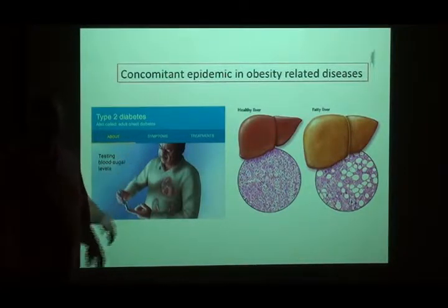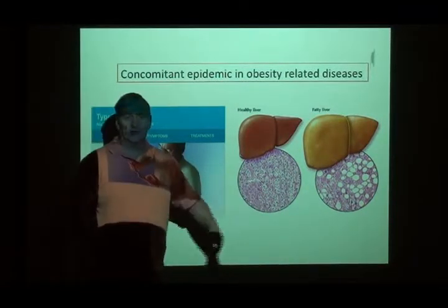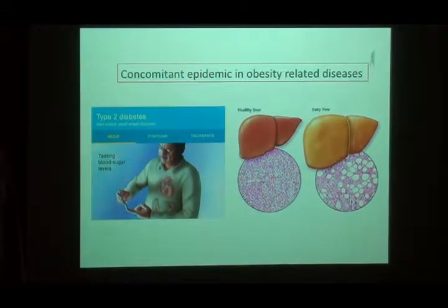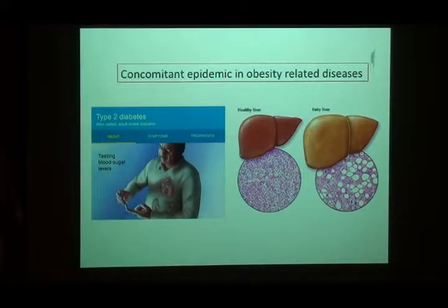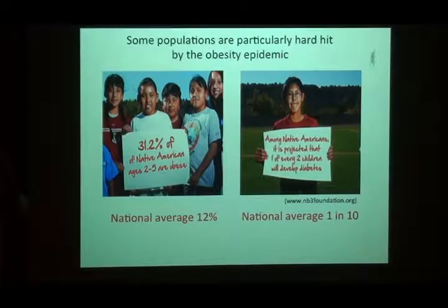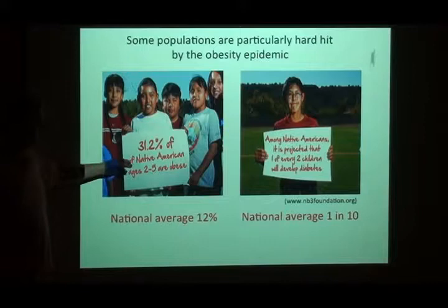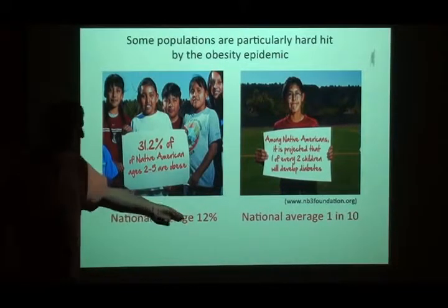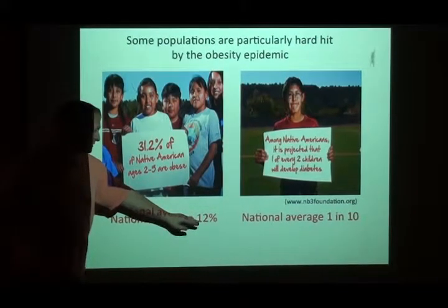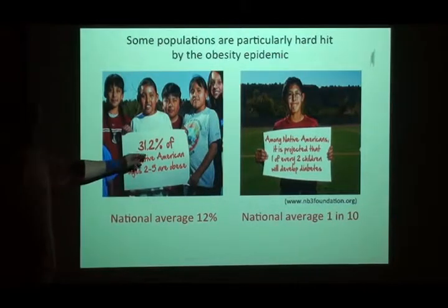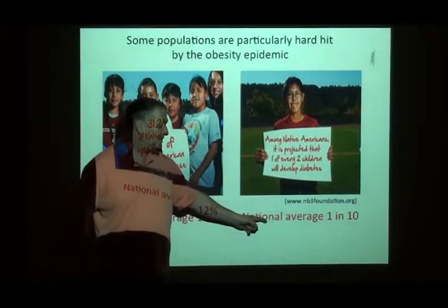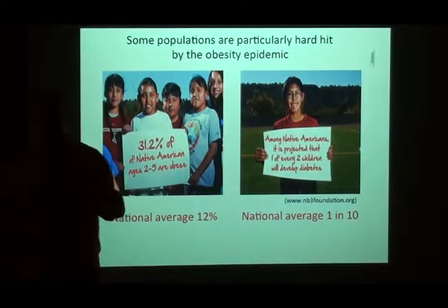Not only are Americans getting fatter, but different subpopulations are being affected to different extents. The Native American population highlights a special problem: 31.2% of Native American children between ages 2 and 5 are obese, compared to the already-horrendous national average of 12%. One in 10 Americans gets diabetes during their life; one in 2 Native Americans. There are cultural, socioeconomic, and possibly genetic reasons for this. One possibility is that these are people whose ancestors, not long ago, lived in a subsistence way, going through periods of severe food shortage and harsh winters — and they developed very efficient metabolisms to make use of what they had.